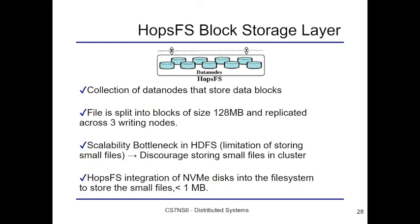The number of replicas and the data node location in the network can be configured by the user. By default, HopsFS places one replica in a node on the local rack, another in a node in a remote rack, and the last on another node in the same remote rack. This is because data nodes in HopsFS are not fully individually distributed, but rather in clusters or racks that are distributed, so this architecture also ensures against rack failure. The scalability bottleneck of HDFS with small files stored in larger-sized blocks is solved in current practices by not storing them with the larger files, which allows having different sized data blocks to optimize storage space.